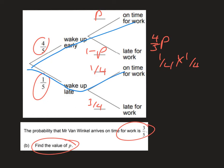So we can use this to form an equation. We know that four-fifths P plus a fifth times a quarter,